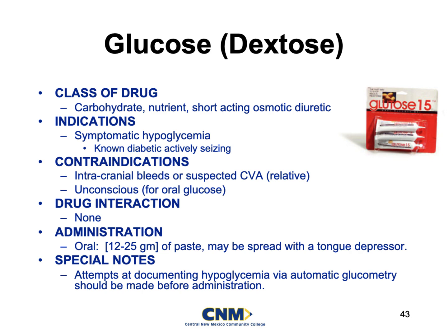Glucose is known as a carbohydrate. It's also a nutrient and a short-acting osmotic diuretic. The only class of drug I'm holding you guys to is the carbohydrate. This is just sugar — it's just dextrose. We use this for symptomatic hypoglycemia patients. These are patients with low blood sugar levels, usually because of diabetes, but anybody could be hypoglycemic at times.